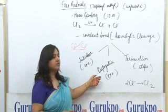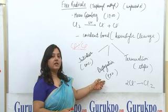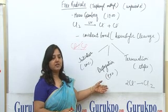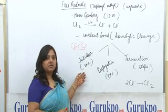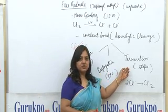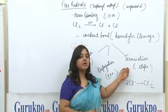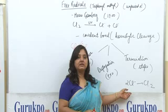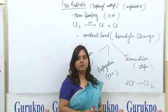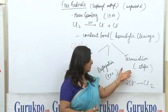The second step is propagation. Propagation means the reaction proceeds — this is an exothermic reaction. In the propagation step, the number of free radicals remains the same, whereas in the initiation step, the number of free radicals increases. The last step is chain termination, where the reaction stops. Here, the number of free radicals decreases. The free radicals combine together to form a stable species, and hence the reaction stops.